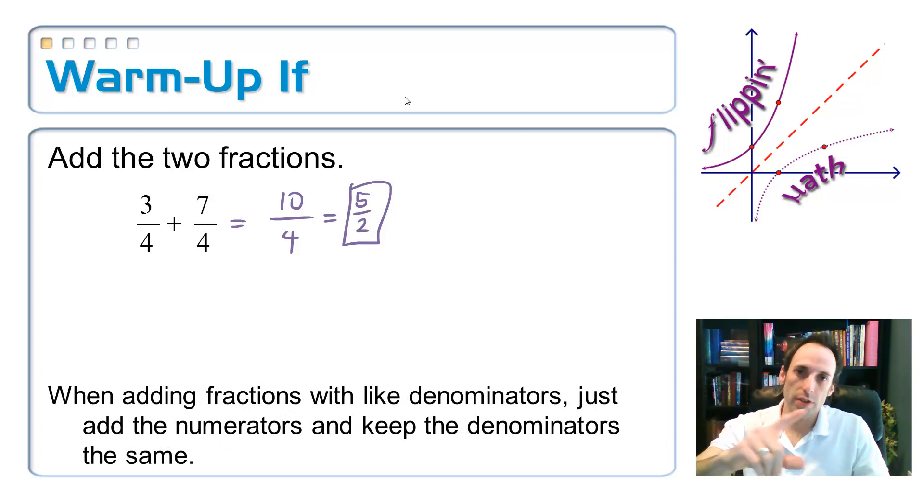So when adding fractions that have like denominators, you keep that denominator the same and you just add up the numerators.